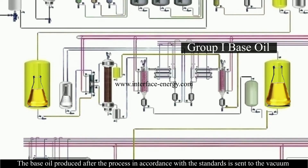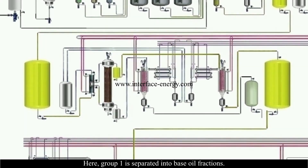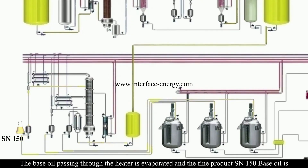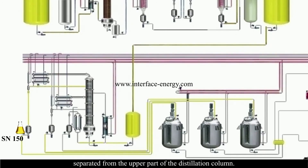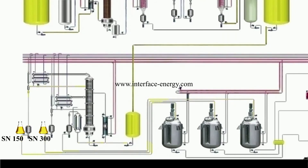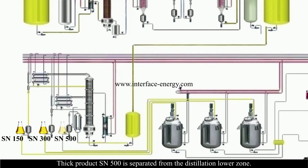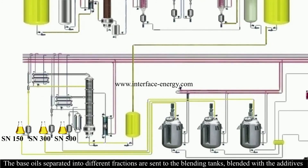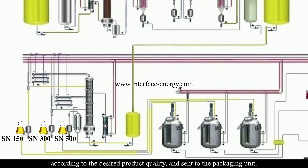The base oil produced in accordance with standards is sent to the vacuum distillation column, where Group 1 base oil is separated into fractions. The fine product SN150 base oil is separated from the upper part of the distillation column, and the middle product SN300 is separated from the middle part. The base oils separated into different fractions are sent to blending tanks, blended with additives according to the desired product quality, and sent to the packaging unit.